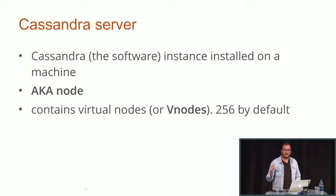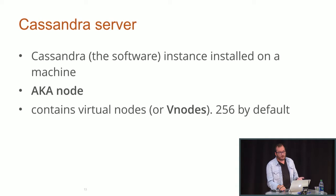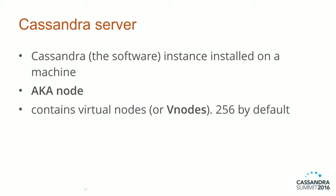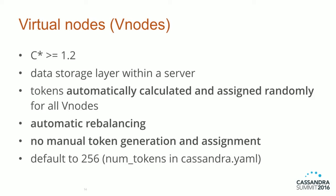The Cassandra server is basically the software — what you download, put somewhere, and start. It's also called a node. It gets a bit tricky because it contains what are called virtual nodes. Virtual nodes were introduced in 1.2 and were fantastic because before that you had to manually assign tokens to every node and compute ranges — pretty complicated for newcomers. The advantage is you don't have to rebalance your cluster; everything is done automatically and you ensure a balanced cluster without manual operations.